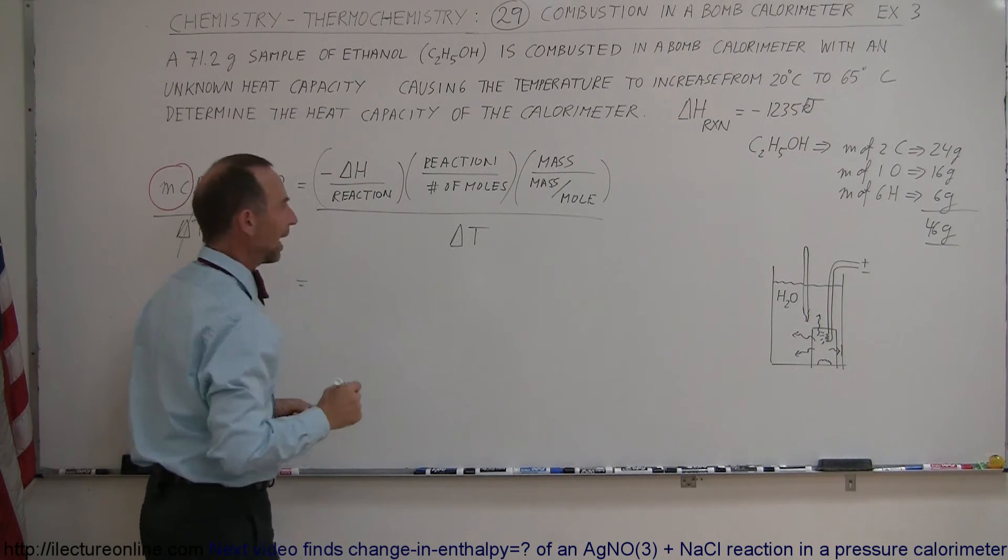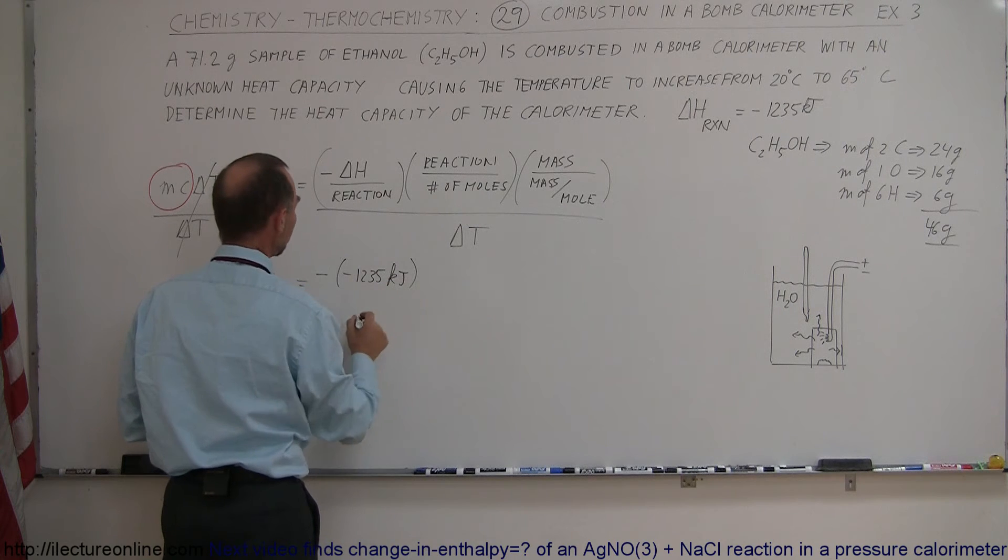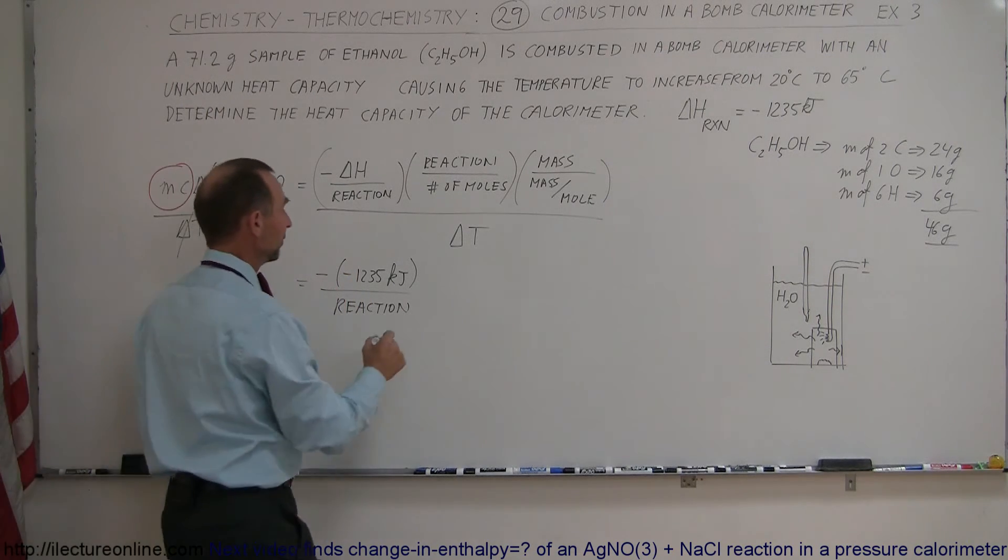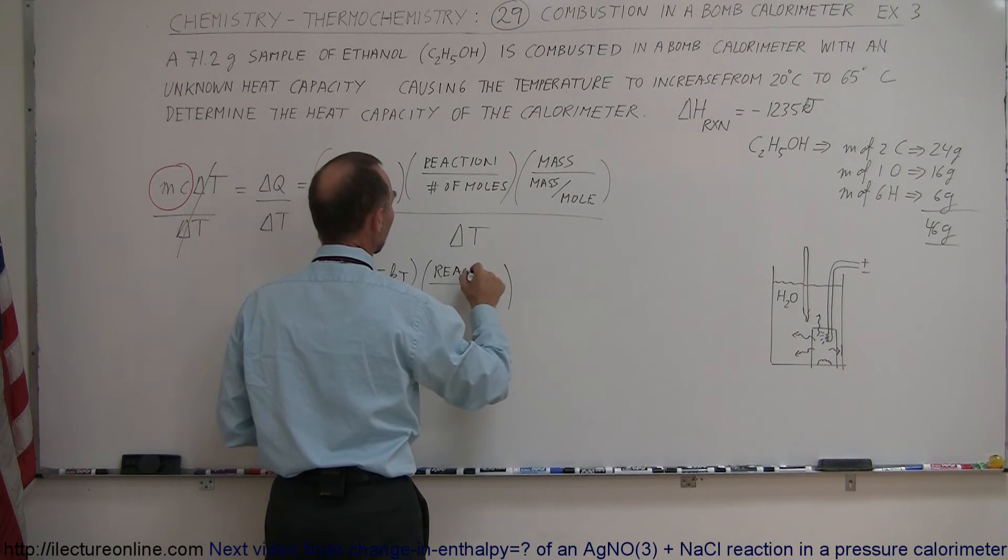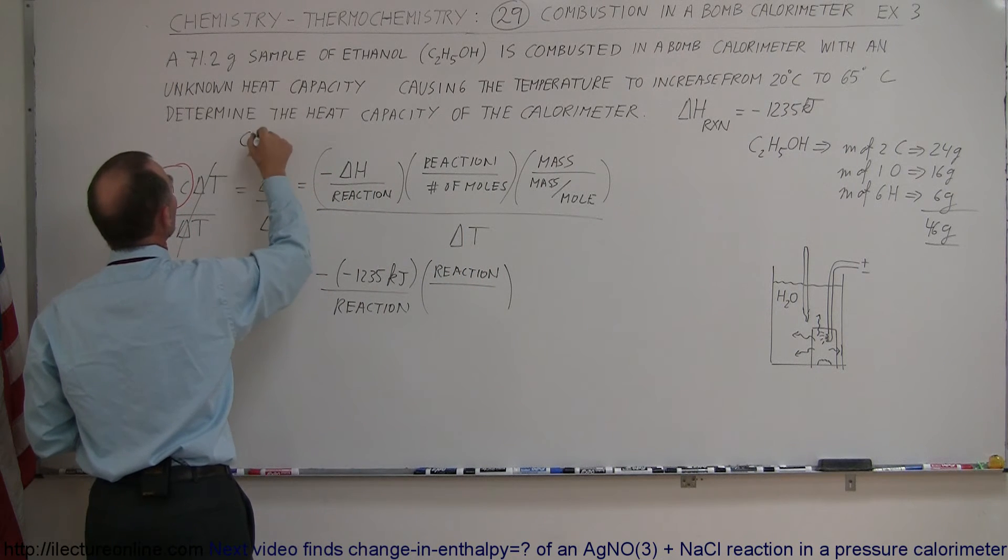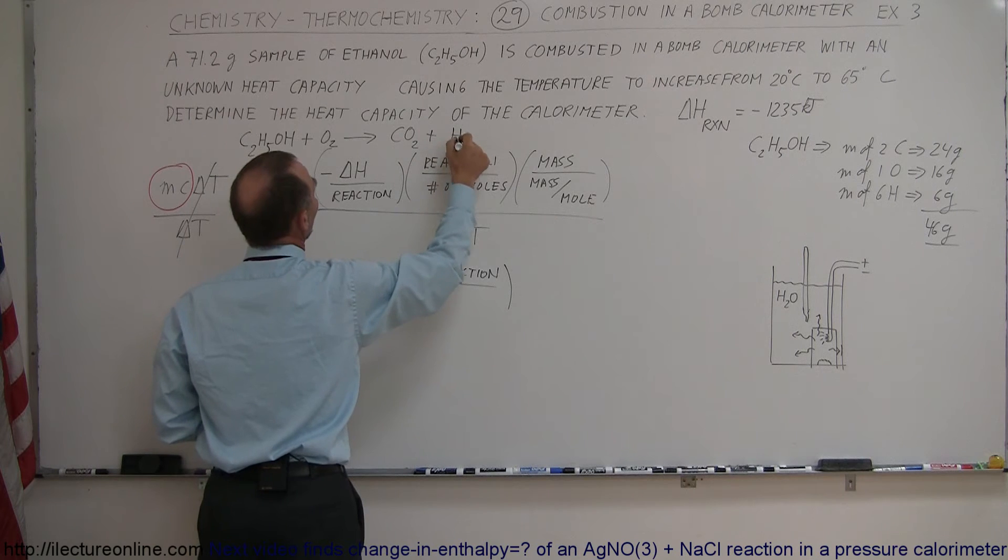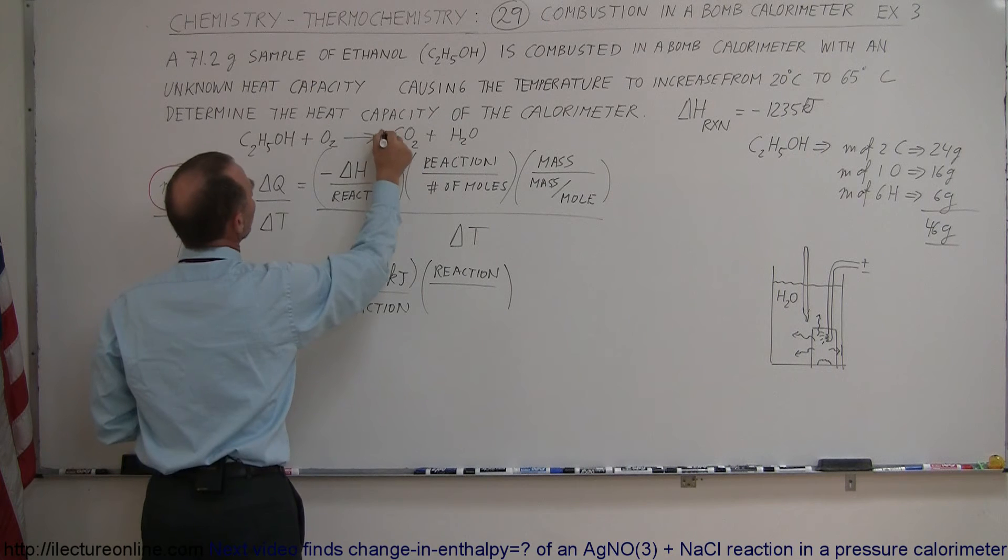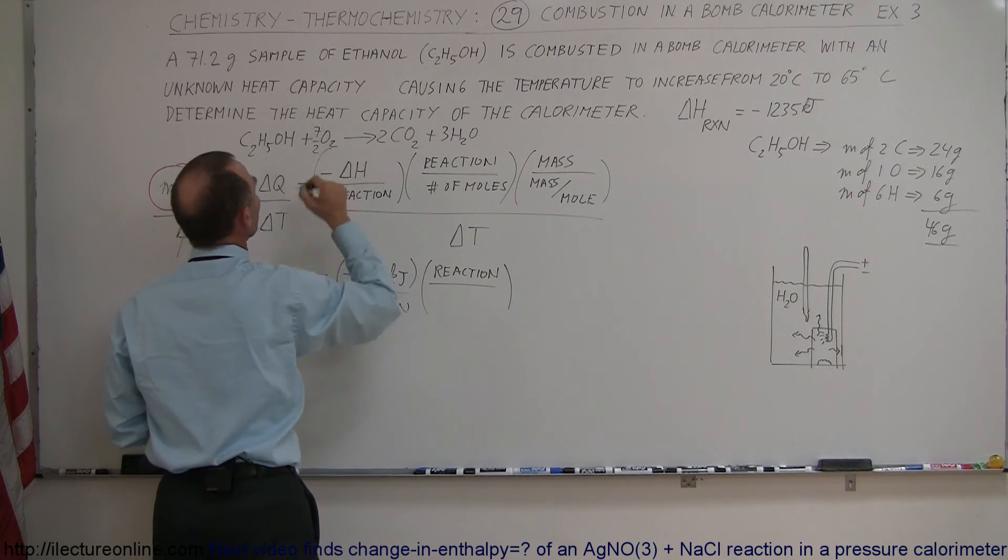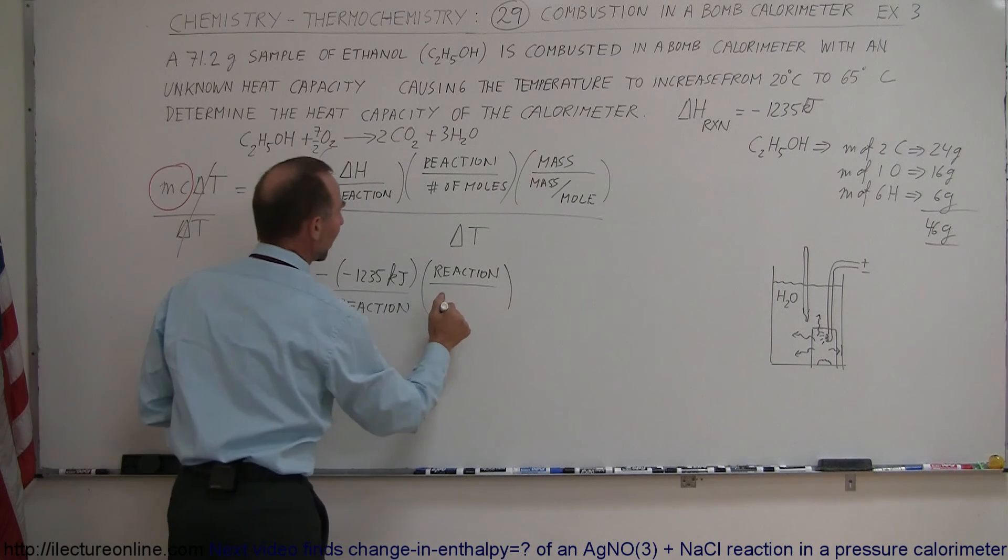So now what we're going to do is plug in all the numbers that we have. So we have an enthalpy of minus 1235 kilojoules per reaction. Notice that the negative will negate the negative. This will become a positive quantity because, of course, the heat capacity of the calorimeter is positive. Times the ratio of the reaction divided by the number of moles of that reaction. So in the reaction, we have ethanol C2H5OH plus oxygen gas that will react and give us carbon dioxide plus water vapor. If we want to balance this, we're going to need two of these, three of these, which total gives us seven oxys on the right side, which means we need seven on the left side. So seven over two moles of oxygen gas will balance the equation. Notice there's only one mole of ethanol in the equation, so divide by one mole of ethanol.